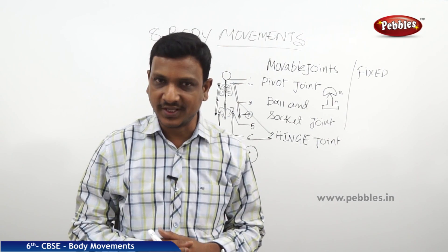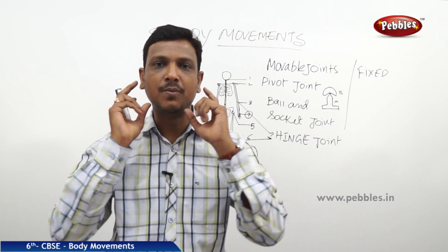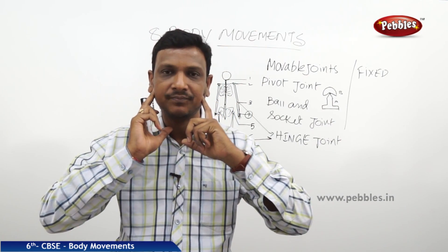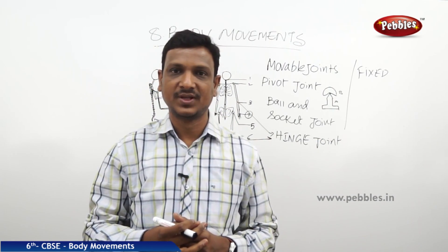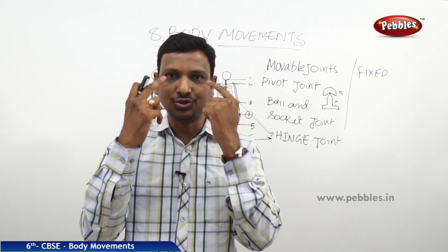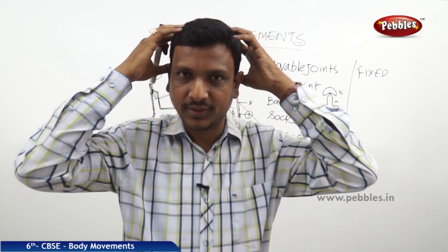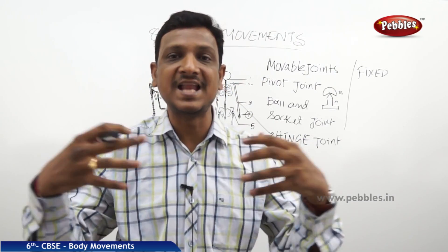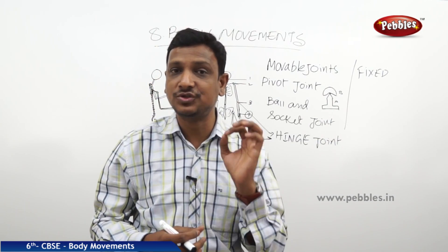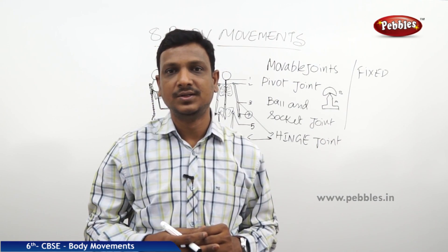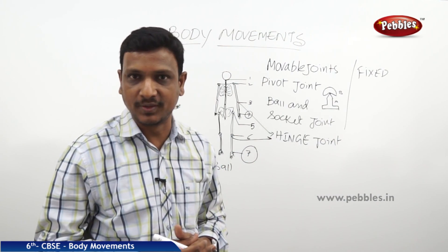We also have fixed joints in which there is no movement at all. For example, when you eat or talk, you move your lower jaw, but your upper jaw cannot move because it is fixed in the skull — that is a fixed joint. Similarly, your skull is not a single bone; it is made up of many bones attached together by fixed joints.